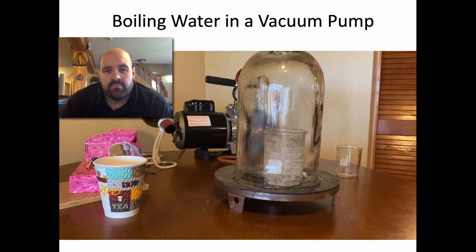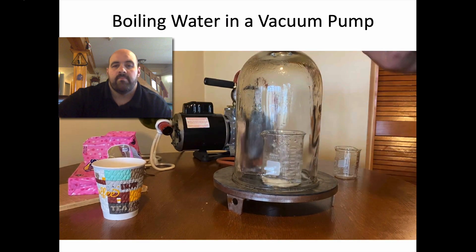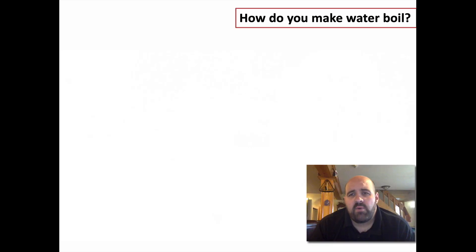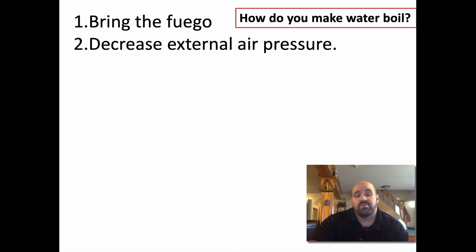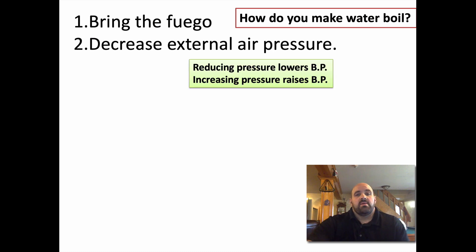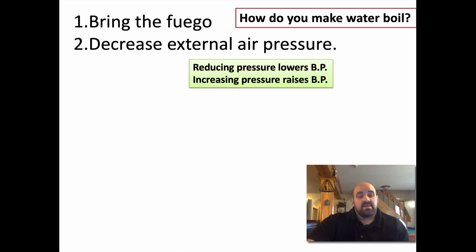There you go — boiling water without adding heat. So how do we make water boil? There are two ways: the obvious one is you add heat, you add fire. The other way is you decrease the external air pressure. For practical purposes we usually add heat, but boiling point does depend on pressure. Reducing pressure lowers the boiling point; increasing pressure raises the boiling point.